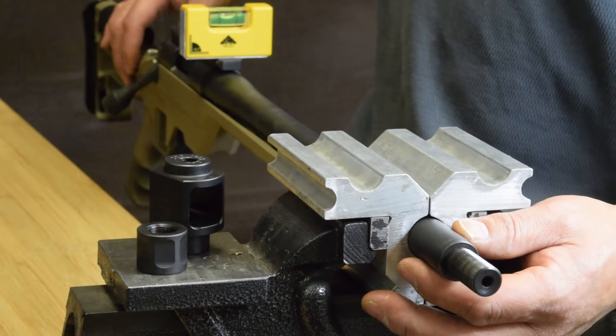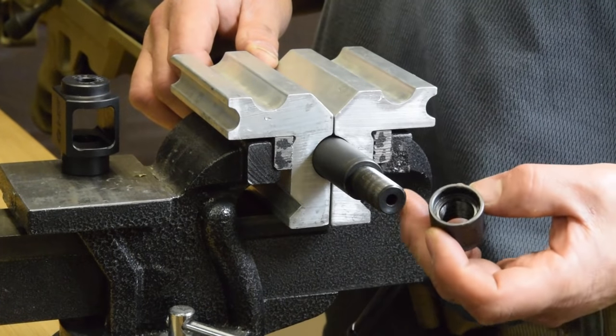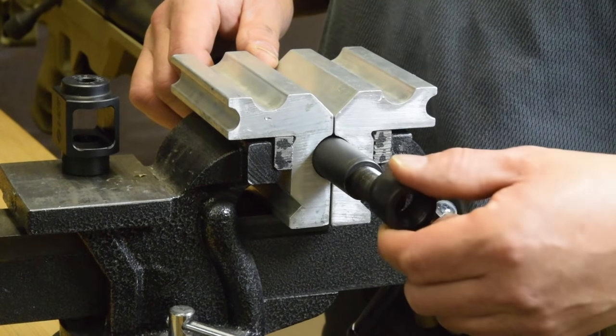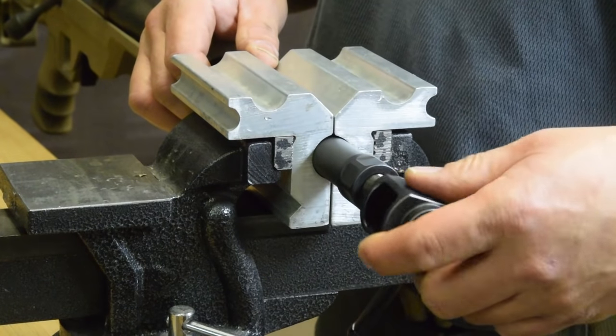Using a bubble level on your scope rail, set up your rifle so it is horizontal. Thread the lock nut onto your muzzle with a counterbore end facing away from the muzzle. Set it hand tight all the way to the bottom and then install your brake.